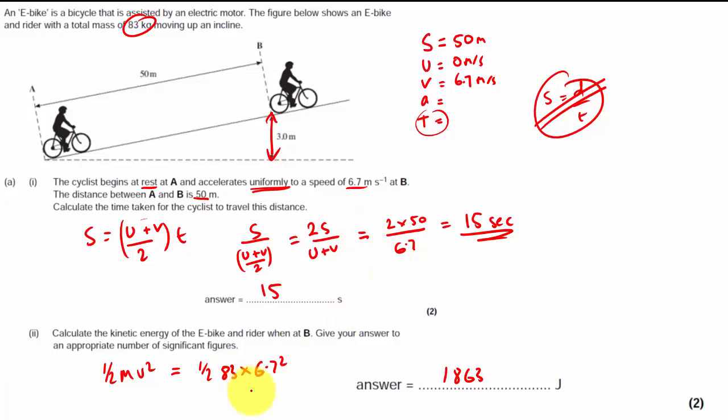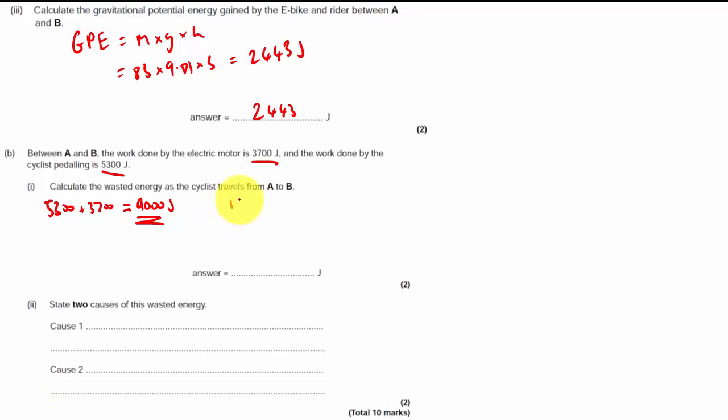But what energy have we actually got out? Well, the cyclist gained this much kinetic energy, 1,863. They actually had 1,863 KE, kinetic energy. And they also managed to gain 2,443 GPE. All joules. That's what they got out. So what does this add up to? So that adds up to 4,306 joules. So this is what they've actually got. This is what they put in.